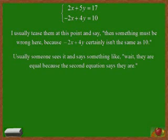But at that point, someone usually sees it and says something like, well wait, they are equal because the second equation says they are. And if you look at the second equation, it says for this problem that negative 2x plus 4y equals 10.